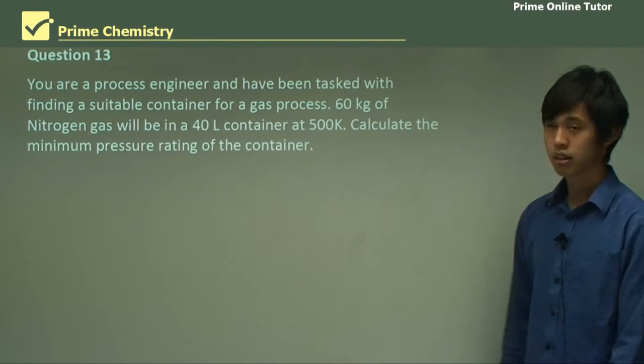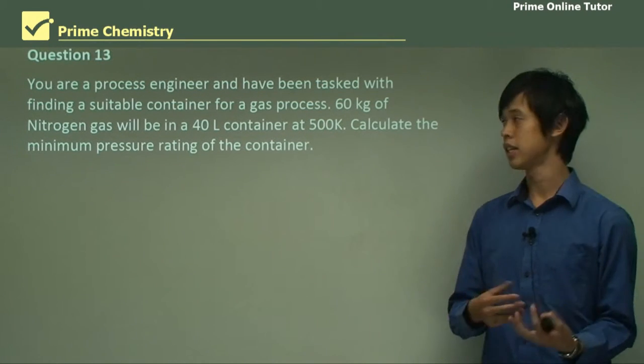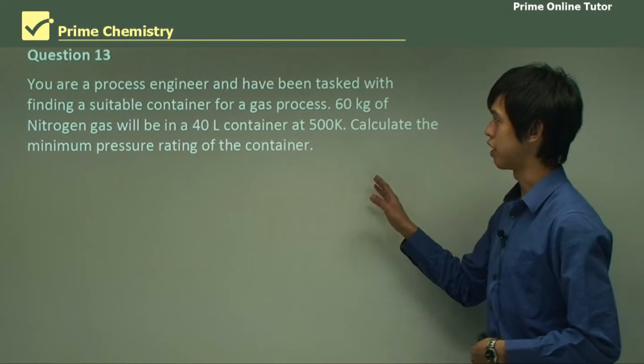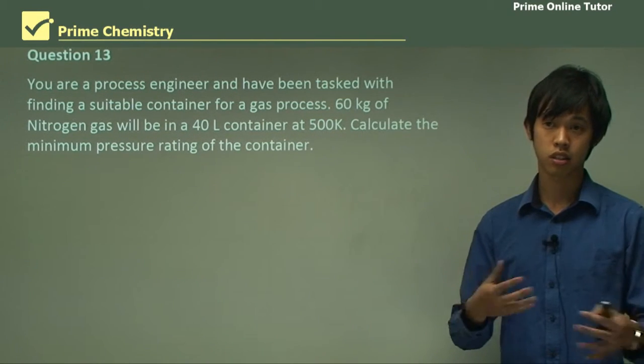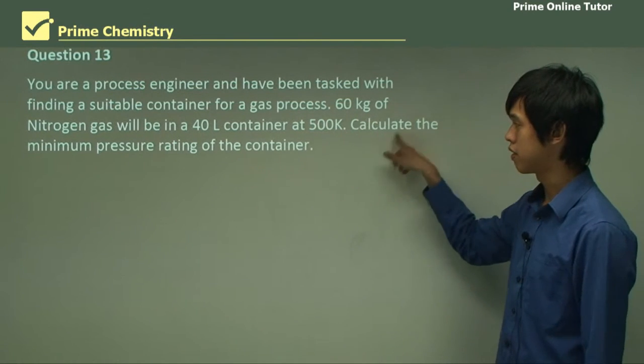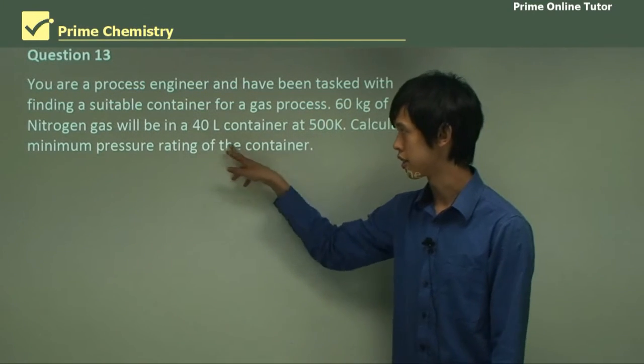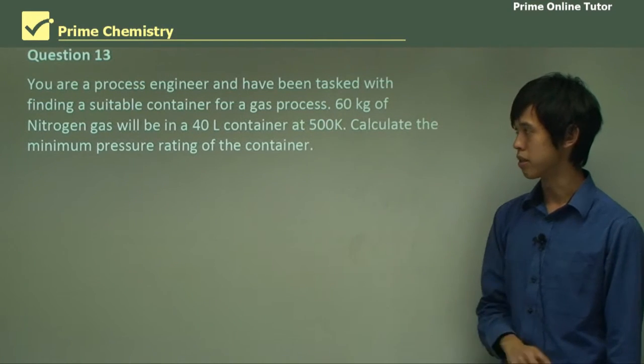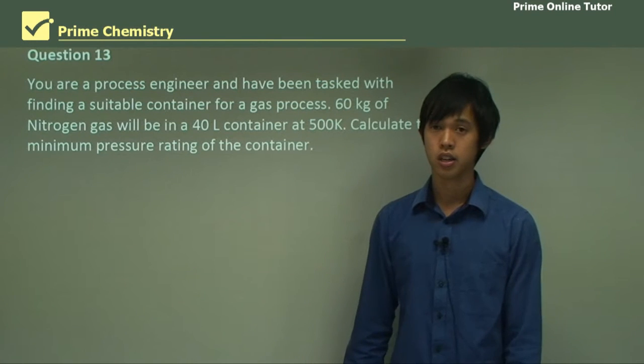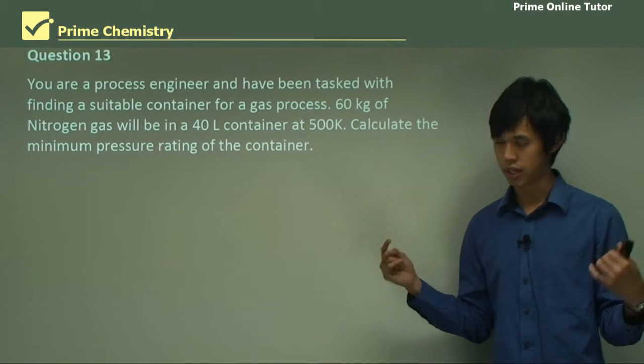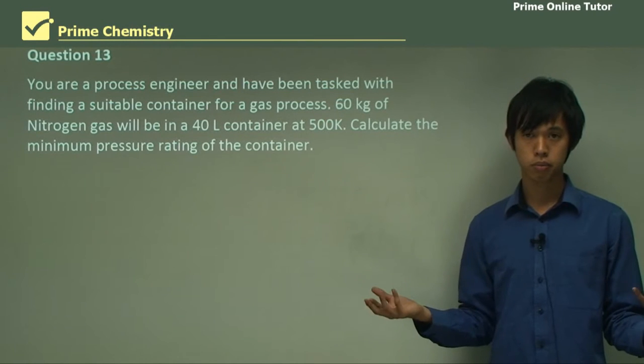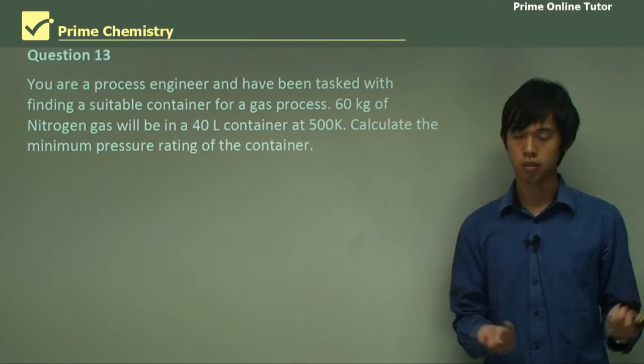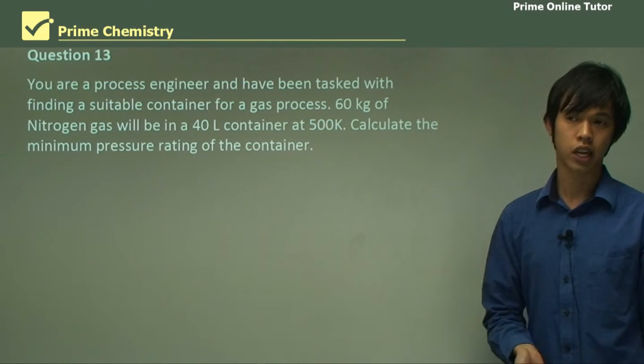So we're now going to take a step into my territory, which is you're a process engineer, and you've been tasked with finding a suitable container for a gas process. So we've got some kind of gas process happening. 60 kilograms of nitrogen gas will be in a 40 liter container at 500 degrees Kelvin. Calculate the minimum pressure rating of that container. So this is a really typical thing to do. We've got some kind of specification. We need to size our system based on this. So what do we do? Well, this is one application of the ideal gas that you can use.